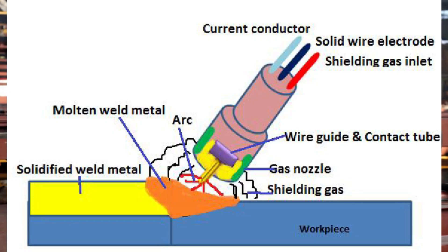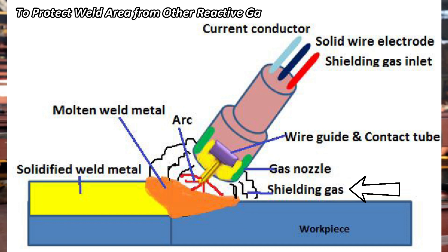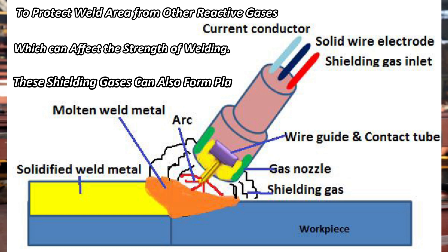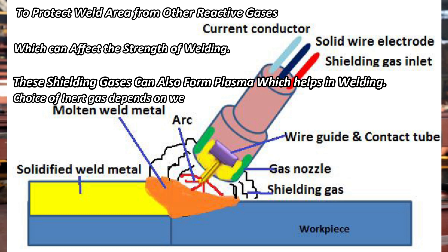The primary function of shielding gases is to protect the weld area from other reactive gases like oxygen, which can affect the strength of the welding joint. These shielding gases also form plasma, which helps in welding. The choice of gas depends on the welding material. Mostly argon, helium, and other inert gases are used as shielding gases.